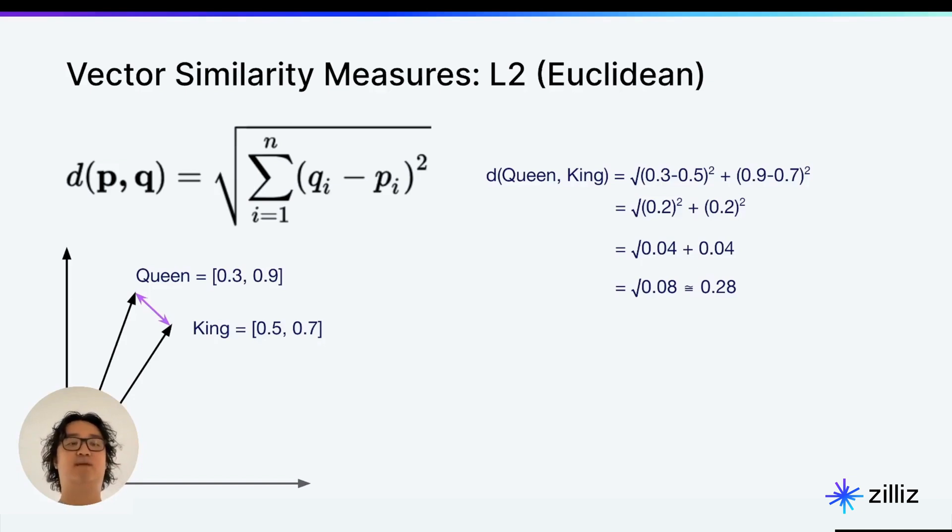So in this example, using this formula, we're going to find the distance between P and Q, which are queen and king. And we're going to start by doing the first index, 0.3 and 0.5. That's Q1, P1, and the difference of that, and we're going to square that.